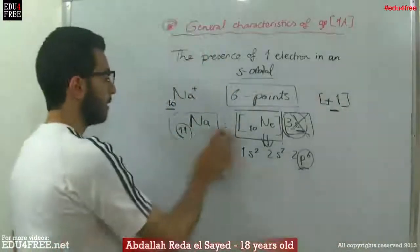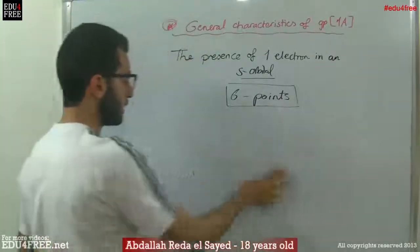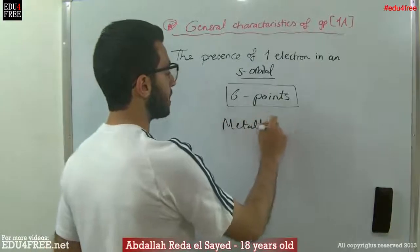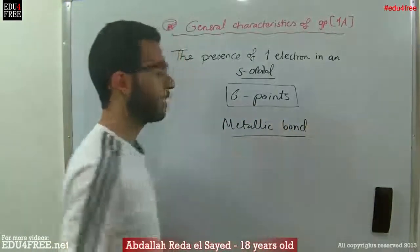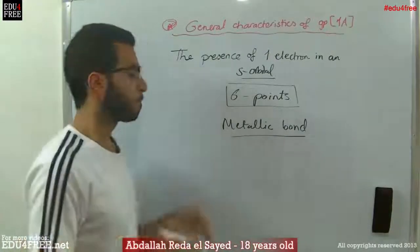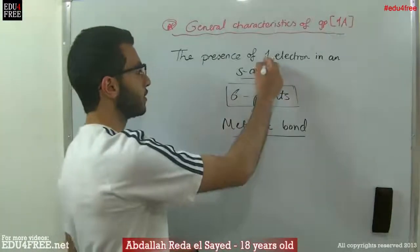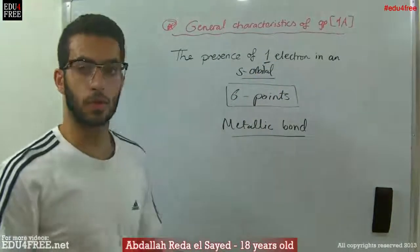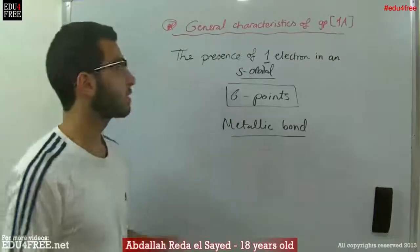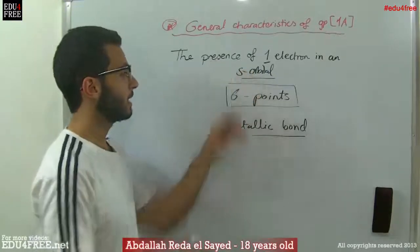The last point is that these elements have a weakness in the formation of metallic bonds. The strength of the metallic bond depends on the valence electrons available to share in the outer layer of the metal. Since Group 1A elements have just one electron, their metallic bonds are very weak. As a result, they are relatively malleable and have low melting points. These are the characteristics related to the presence of one electron in an outermost energy level as an S orbital.